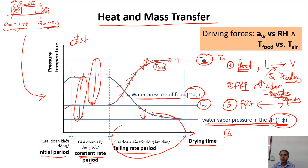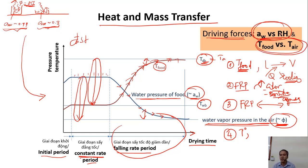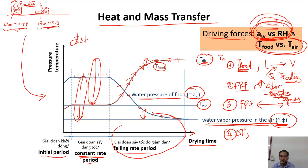Key point four: drying is not only a matter of temperature but also the difference in water pressure between food and air. These are the two driving forces. We can do drying at room temperature or even at minus 20 degrees C without heating, as long as we maintain the difference in water pressure. The difference between water activity of food and relative humidity of air must be maintained.